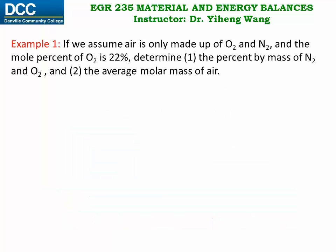Let's look at this example problem. If we assume that air is only made up of oxygen and nitrogen, and the mole percent of oxygen is 22 percent — though in reality that is not the case — we need to determine: first, the percent by mass of nitrogen and oxygen, and secondly, the average molar mass of air.